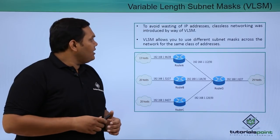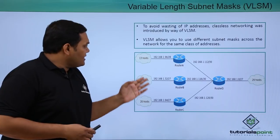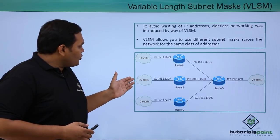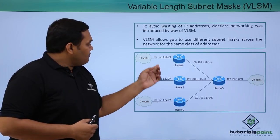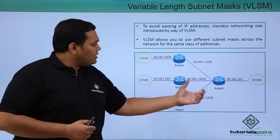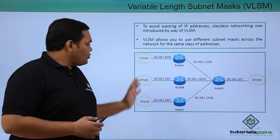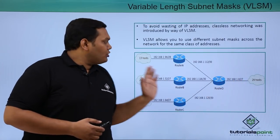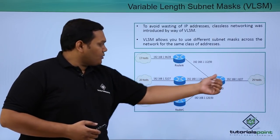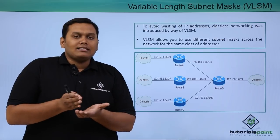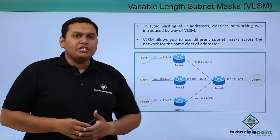VLSM is configured with different subnet masks across the network. For example, there are 13 hosts, 20 hosts, and 20 hosts connected to routers A, B, and C with different networks, and altogether connected to 29 hosts. The source contacts the destination through these networks, each being a separate network, and they communicate using classless networking protocols.